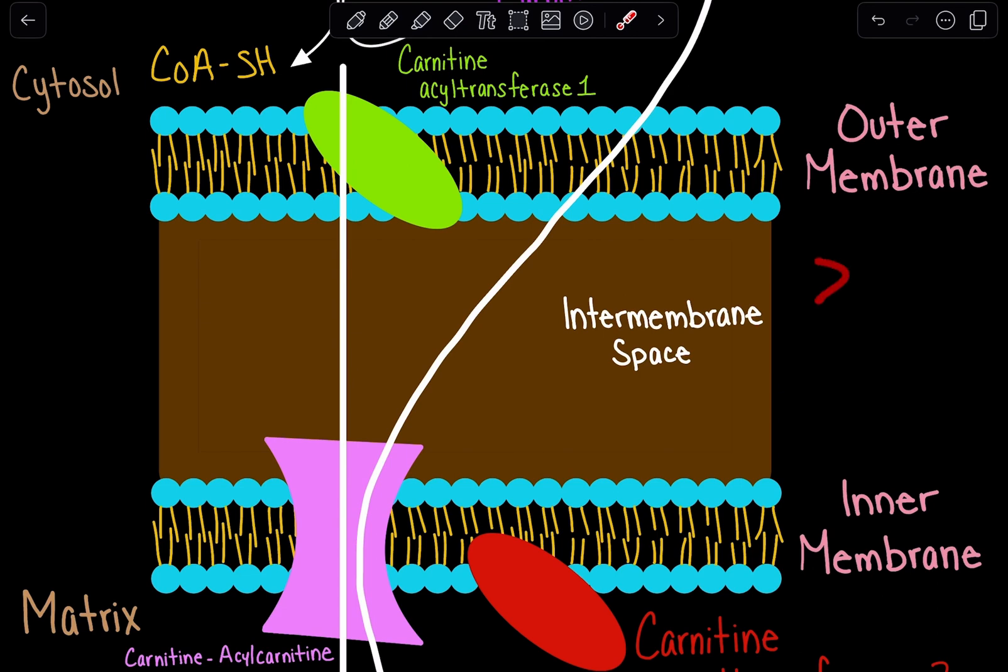But if your fatty acid has more than 14 carbons, it will need this carnitine system. So if you have more than 14 carbons, you're going to have to utilize the carnitine shuttle.